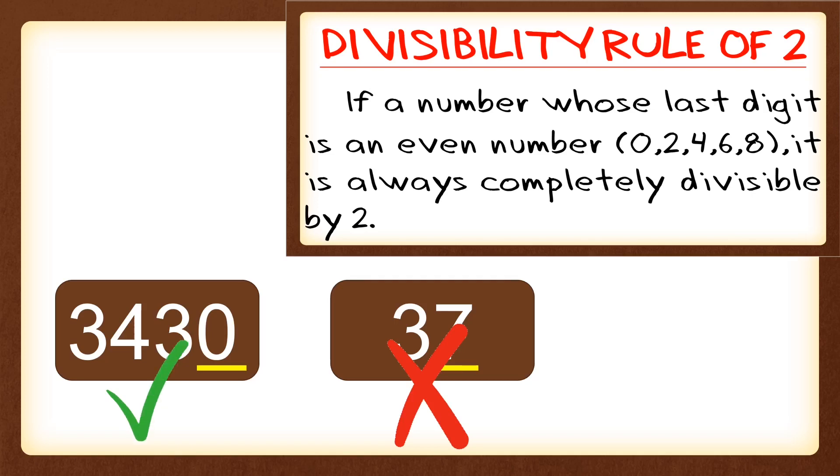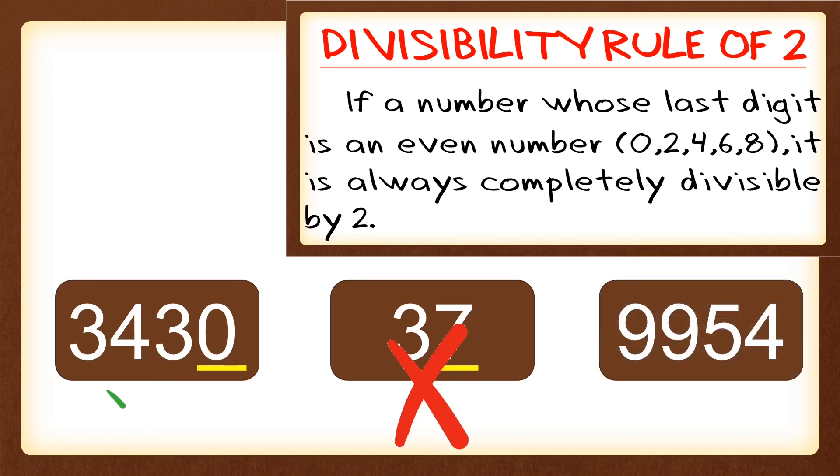Last is 9,954. So again, we're going to look at the last digit, and the last digit for this is 4. And 4 is an even number so that it is divisible by 2.